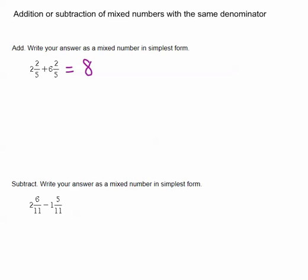And then your 2 fifths plus 2 fifths, you're going to keep your denominator, 5ths, and you're going to add your numerators, 2 plus 2 is 4. So 8 and 4 fifths is our answer.